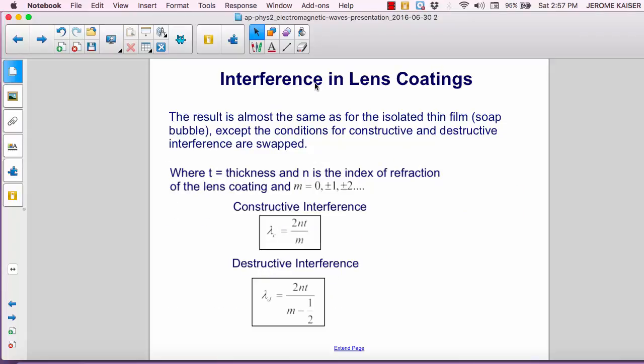The equations that result are almost the same as those for the isolated thin film, for example the soap bubble, except the conditions for constructive and destructive interference are swapped. That's because here in both cases, the reflected rays both undergo a 180 degree phase change.